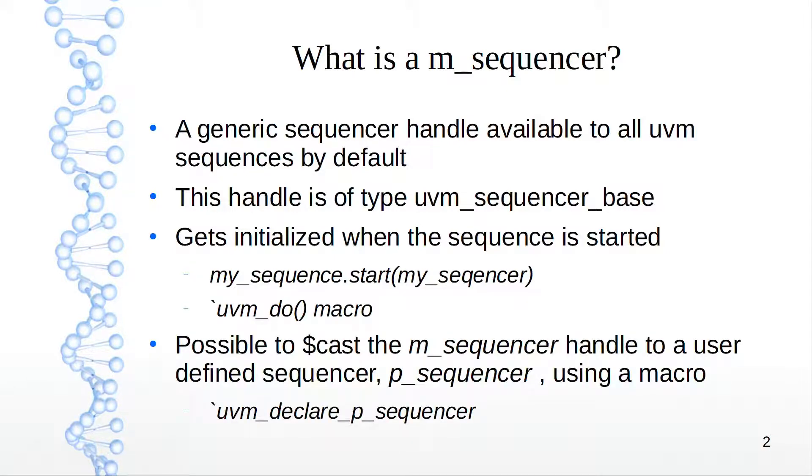This m_sequencer can be cast to a user-defined sequencer, which is a p_sequencer, using a macro called uvm_declare_p_sequencer. I'll go over more detail on what this is and how it happens next.